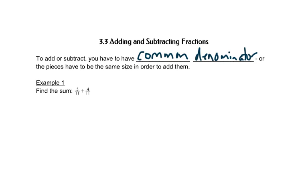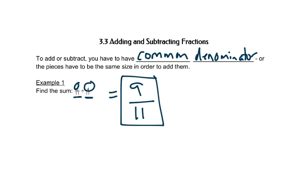So like in example one, we have five elevenths plus four elevenths. Those are both elevenths, so we can just add the number of pieces that are shaded. We have five pieces that are shaded and four pieces that are shaded, that gives us nine shaded pieces — or nine elevenths.